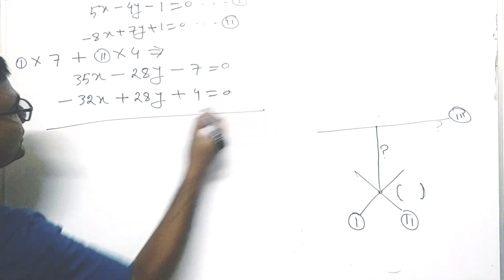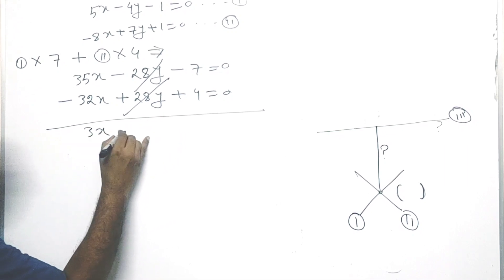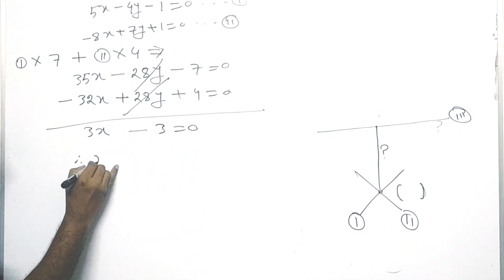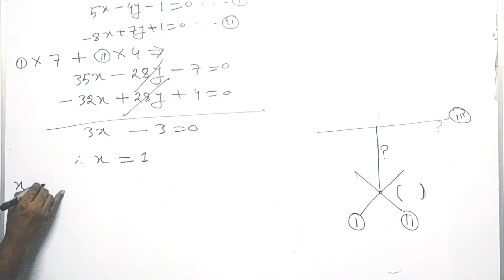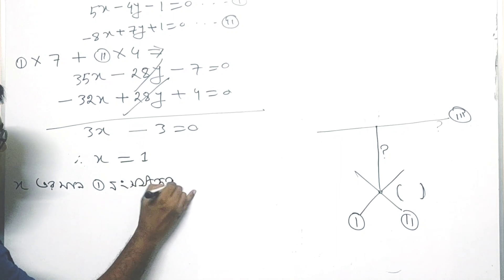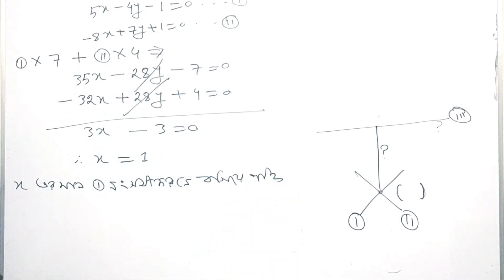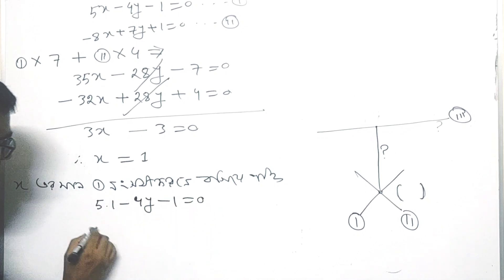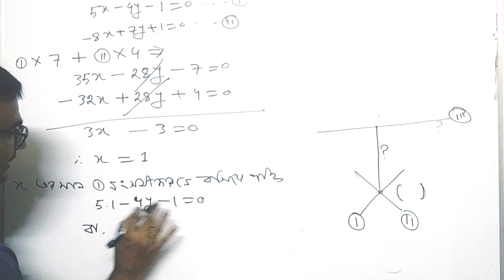Here, 4 equals 0. You can do the same thing and get minus 3. We see x = 1. With x = 1, we apply equation number one: 5 times 1 minus 4y minus 1 = 0, which gives 4y = 4, so y = 1. Then we check this value.